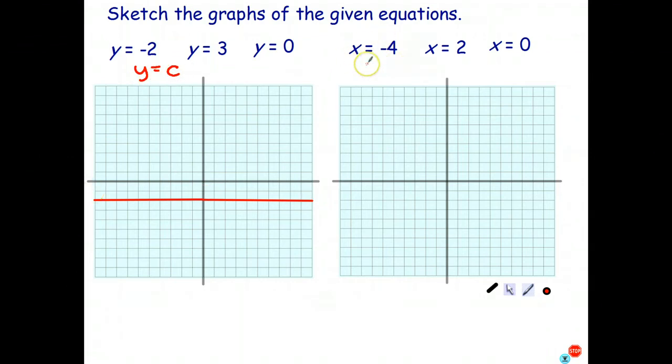What about this one here, x equals negative 4? Well, from the previous page, we learned that any equation of this form is a vertical line, and the x-intercept, in this case, is negative 4. So that's just there. And we go ahead and draw the vertical line that passes through that point. And there's the graph of x equals negative 4.